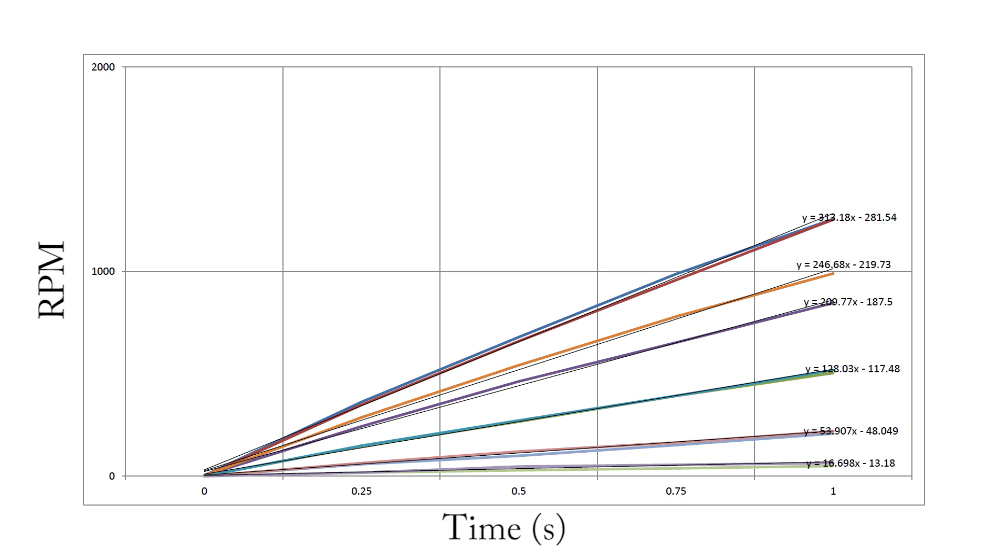And I went ahead and put an interpolation, just a trend line through at a linear one, and we have the slope, which is something that we can use here to make comparisons. It's basically the torque. The true torque value would just be multiplied by a constant. And so at the top, the top line, two lines, are the 55-turn motor at full throttle.